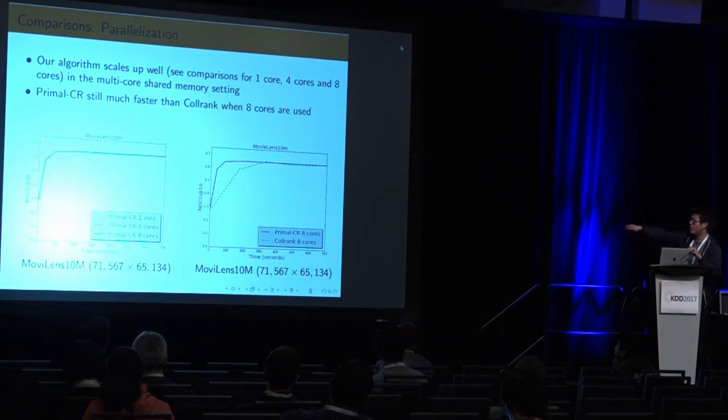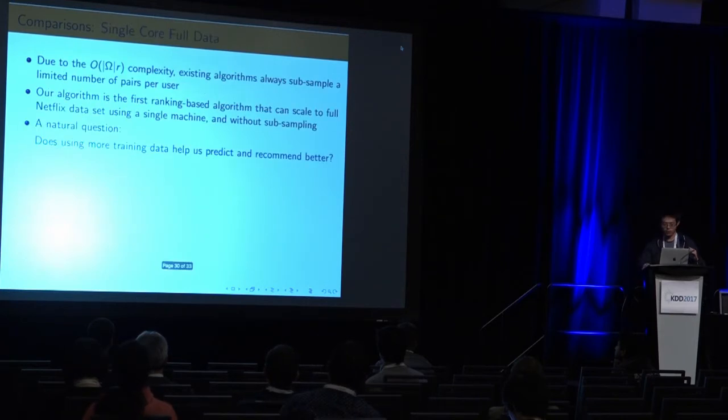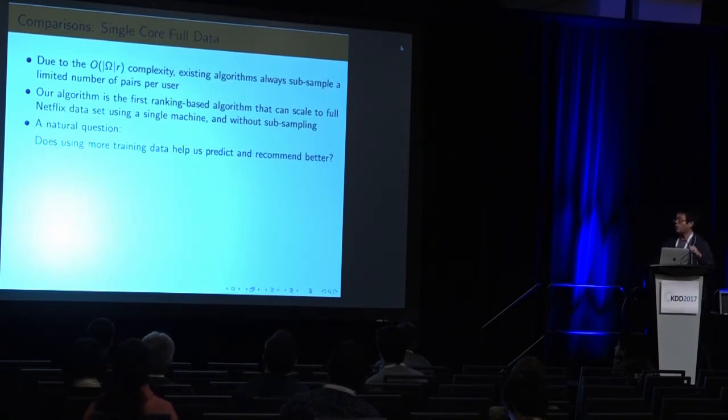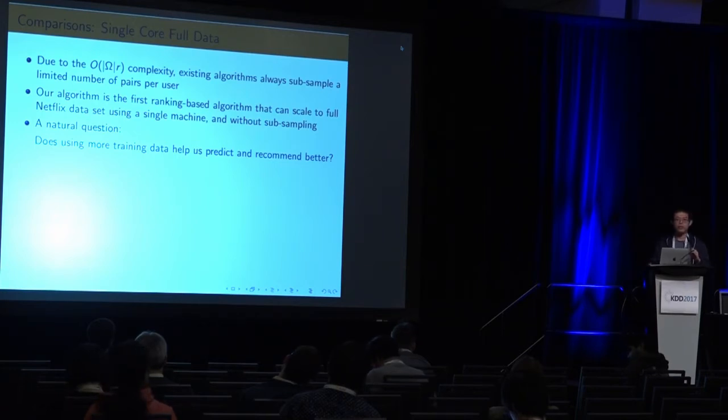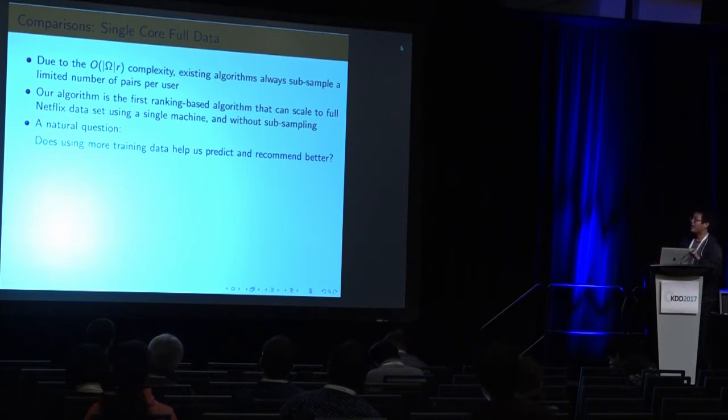Using C++, the plot will be the gap between our algorithm with the algorithm will be bigger, and also the speed up when you scale from one core to eight cores, the scaling up will also be better. When I was reading the papers in prior literature, I always have this question, why do you do subsampling when you actually can use full data set? Is there any reason for doing this? That's the motivation of our algorithm, because the previous algorithm doesn't really scale up to the full data, so they just do subsampling. Our algorithm is the first ranking-based algorithm that can scale up to the full data set using a single machine and without subsampling.